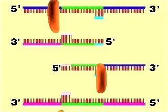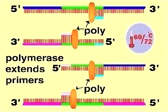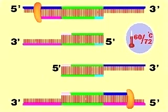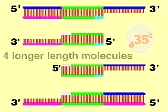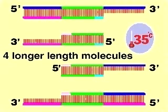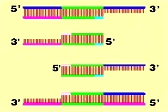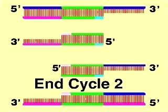The temperature can be raised to 72 degrees to speed this reaction. At the end of cycle two, four partially double-stranded molecules are produced. All contain the target sequence plus some adjacent DNA.